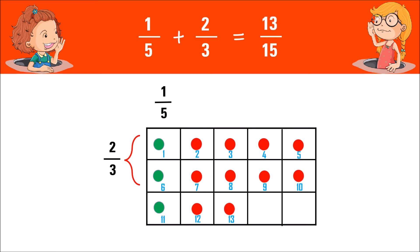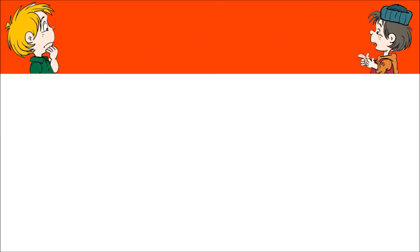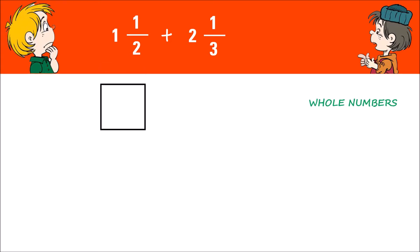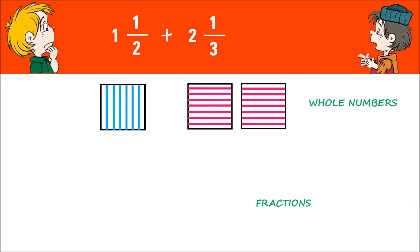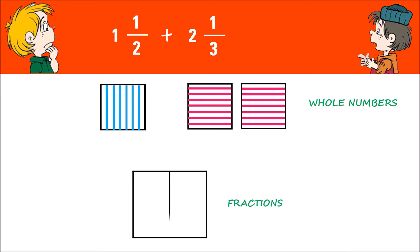Thus the answer is thirteen fifteenths. Next is adding a mixed number. Let's add one and one half plus two and one third. For the whole numbers, draw one box for one and one half and two boxes for two and one third. Shade them vertically and horizontally. Then for fractions one half and one third, make two columns and three rows.